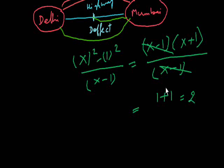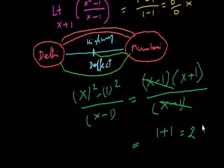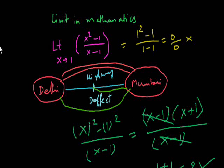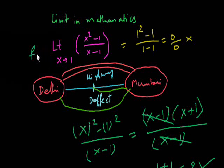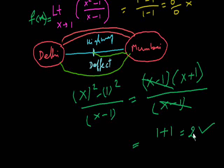So the best answer of this function, this is an actual correct function, is not 0 divided by 0, but it is 2. Because I am using the second approach.